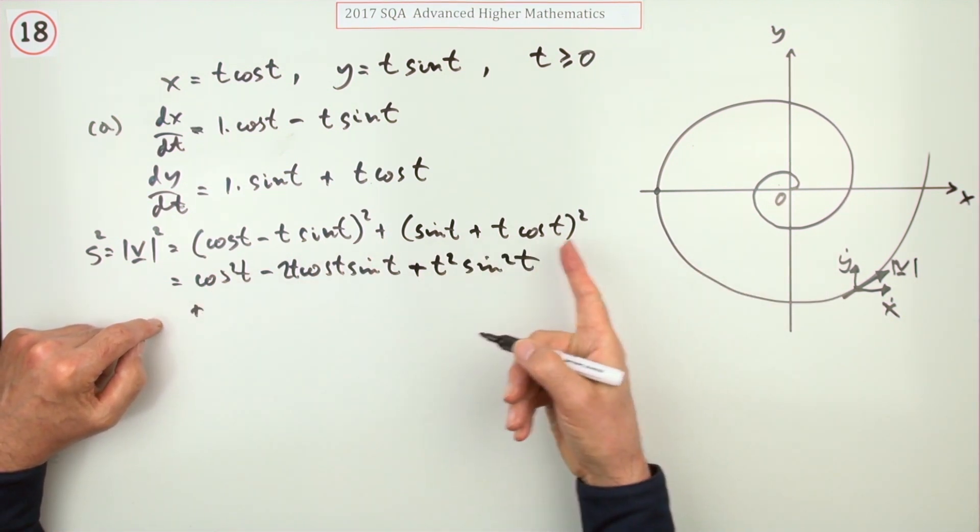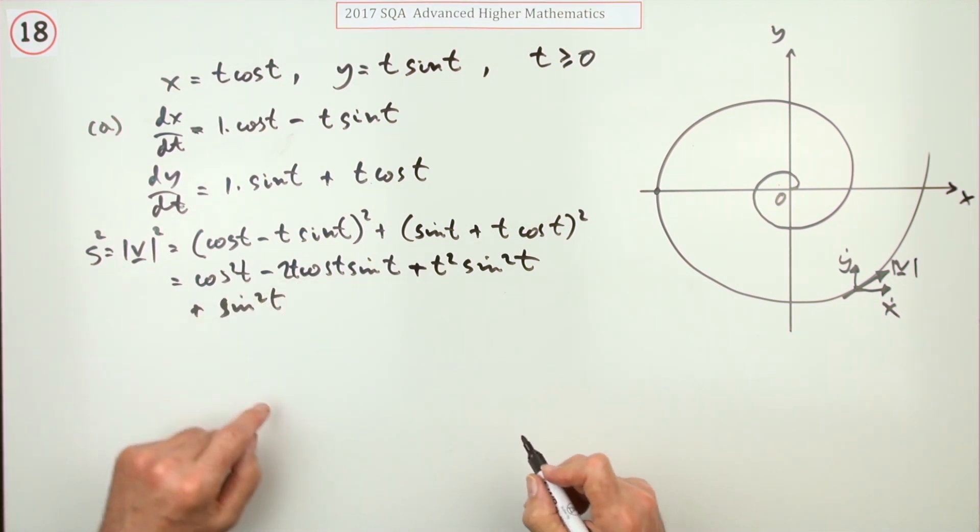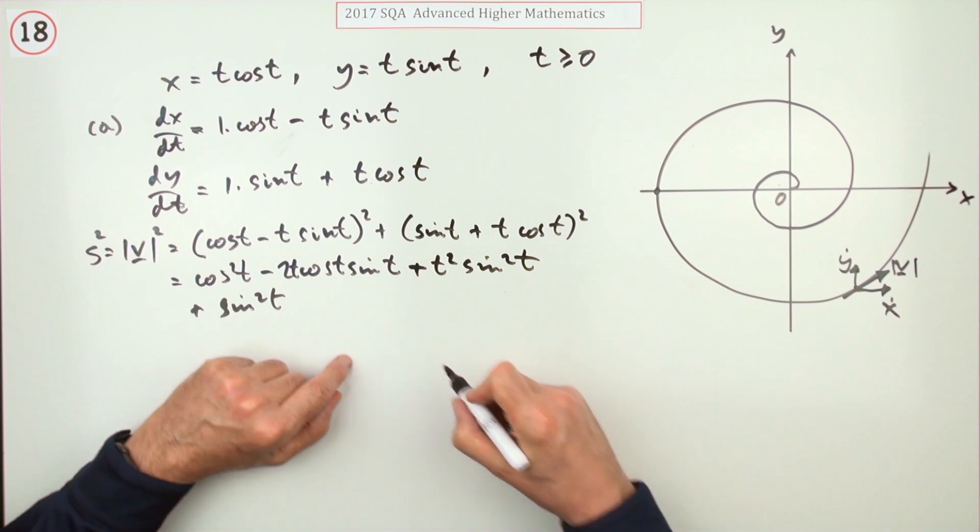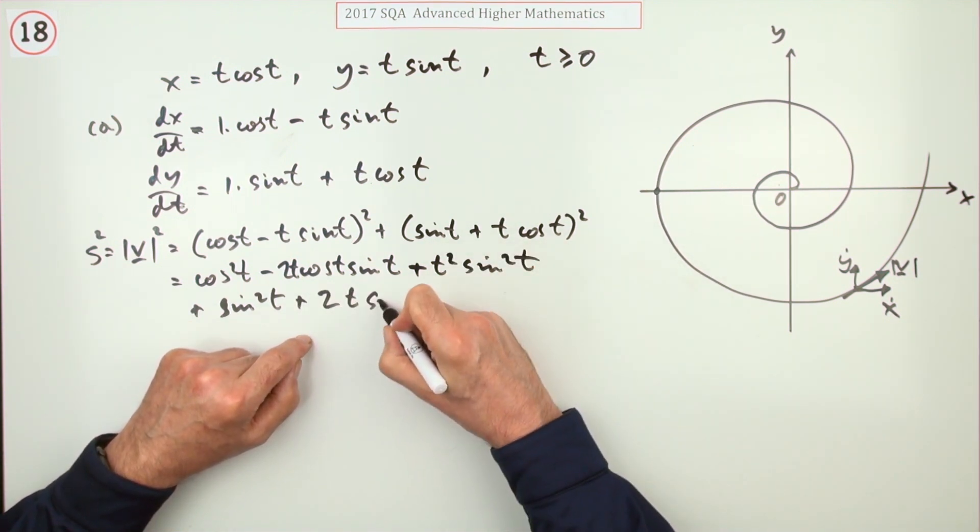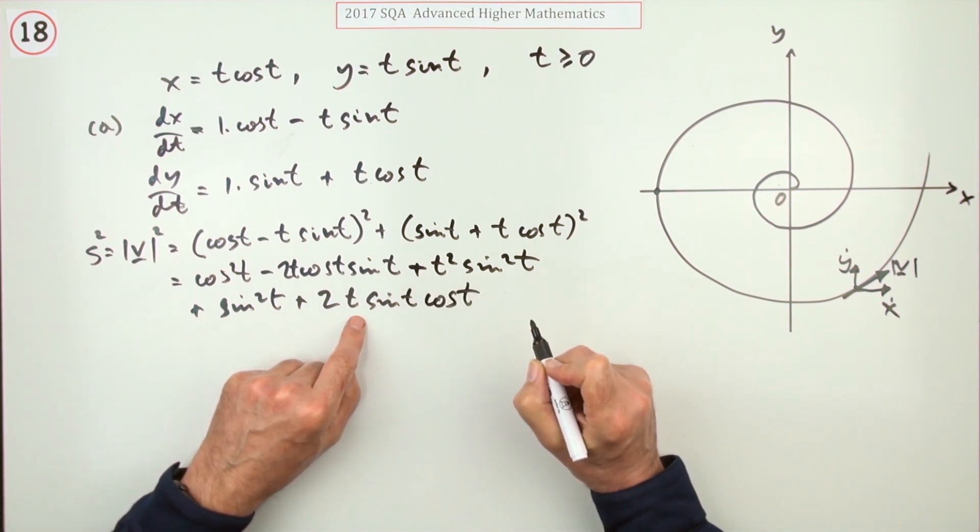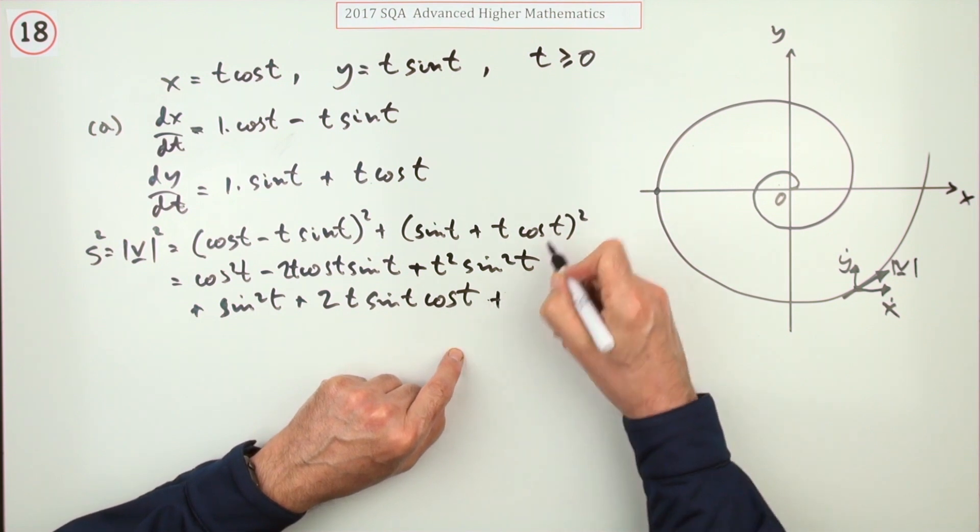Plus, now do this one: square the first, sine squared t. Things are beginning to pair off nicely. Twice the product, so 2 times t sine t cos t—that pairs off even better because I've got a plus and a minus of the same expression. Square the last, so it's plus t squared cos squared t.